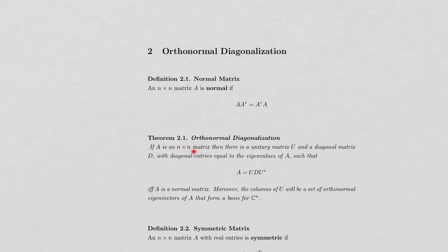If A is an n-by-n matrix, then there is a unitary matrix U and a diagonal matrix D with diagonal entries equal to the eigenvalues of A, such that A can be factored as UDU*, where U* is the adjoint of U. This holds if and only if A is a normal matrix. The columns of U form a set of orthonormal eigenvectors of A that are a basis for Cⁿ.